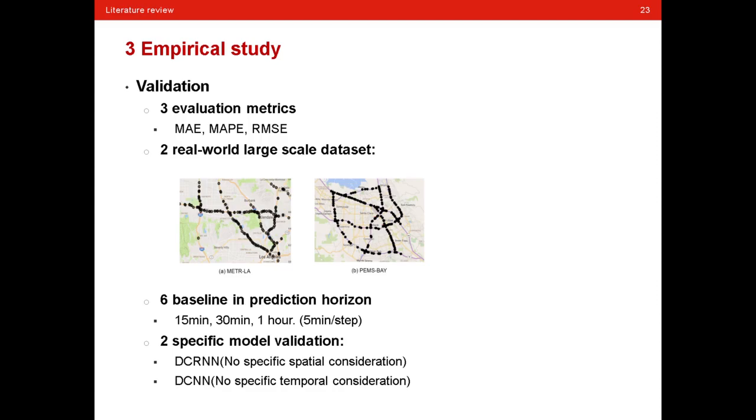Now we have finished the review on methodology, and then we come to the empirical study review. In this part, I want to introduce some of the empirical study that gave me the deepest impression. The first is the validation section. The paper used three evaluation metrics, including MAE, MAPE, and RMSE, which are normal metrics used to test the model performance. And two real-world large-scale datasets are used for validation. In addition, six baselines in different prediction horizons are implemented for model comparison.